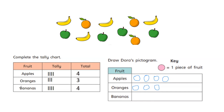Finally, bananas. I have one, two, three, four tally lines, four in total. So I'm going to draw how many? Count with me: one, two, three, four. So now you might want to pause the video, and on your sheet you need to draw your tally chart and then your pictogram for your picture of your fruit.